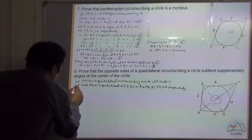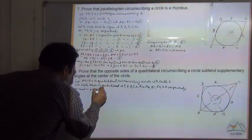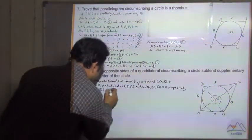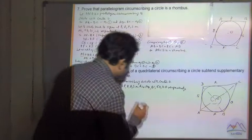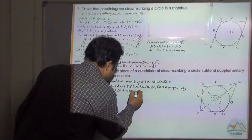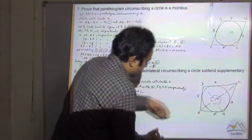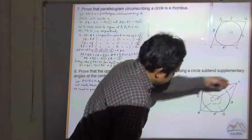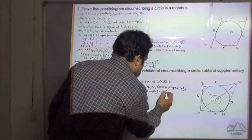We need to prove that angle DOC plus angle AOB is equal to 180 degrees, and angle DOA plus angle COB is equal to 180 degrees.